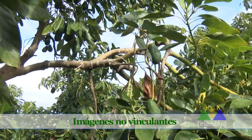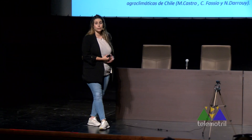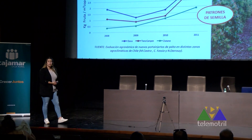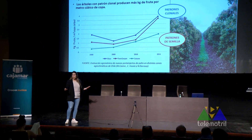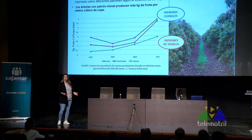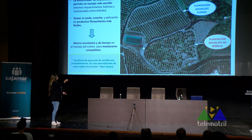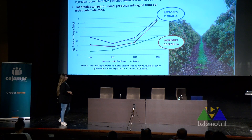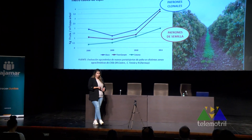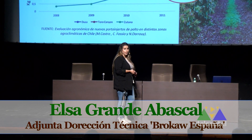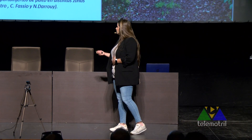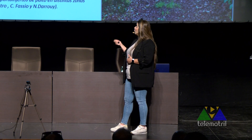Además, se ha comprobado que los patrones clonales son bastante más eficientes en la producción. De nuevo un estudio de Chile de la Universidad de Valparaíso, que analizó los kilogramos de fruta obtenidos en árboles con el mismo volumen de copa: Dusa, Toro y Zutano con el mismo tamaño. Para el mismo tamaño de copa, Dusa y Toro produjeron más que Zutano. Esto nos permite mantener los árboles con menor tamaño, muy adecuado para el tema de mano de obra y recolección, evitando riesgos laborales. Manteniendo el árbol con un tamaño más pequeño conseguimos más producción y podemos hacer plantaciones con marcos más intensivos.